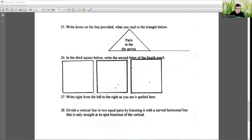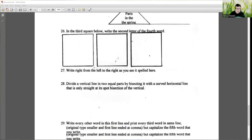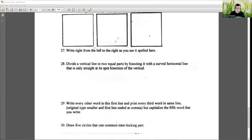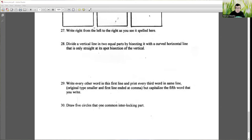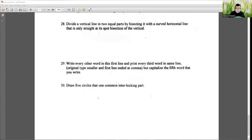Twenty eight, divide a vertical line in two equal parts by bisecting it with a curved horizontal line. It's only straight as it's spot section of the vertical. Twenty nine, write every other word in this first line and print every third word in the same line, original type smaller and first line then comma, but capitalize the fifth word that you write. And the final one, draw five circles that one in common interlock it in part. And that's ten minutes to do that.